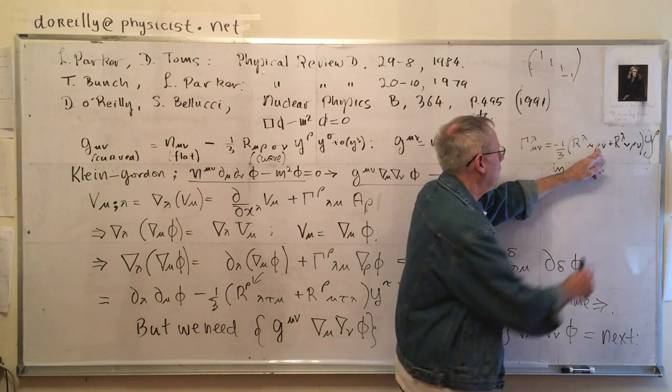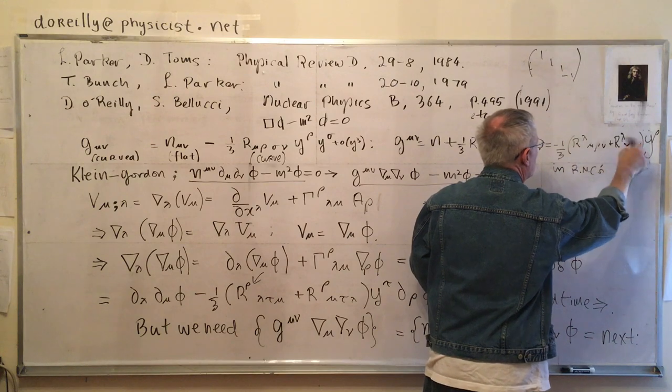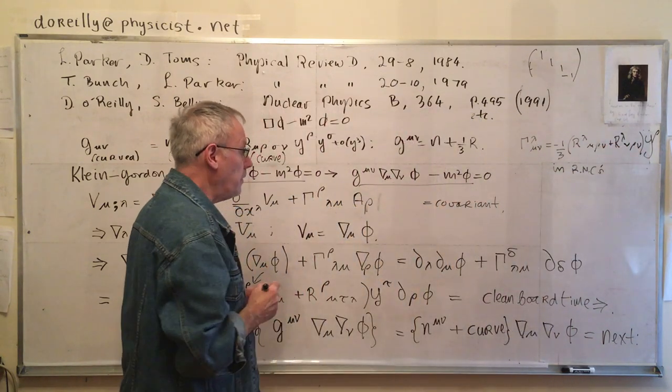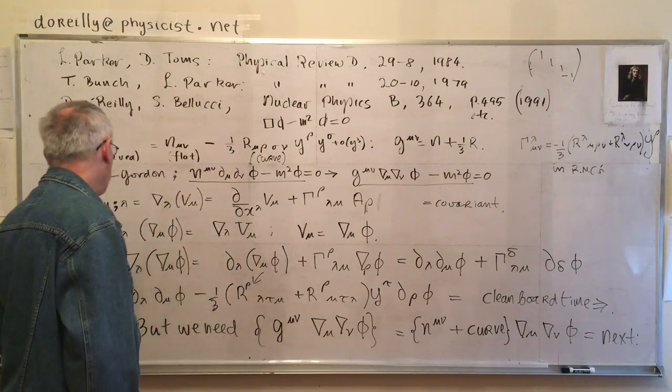Now, the Christoffel symbol, gamma lambda mu nu, is just negative one-third, R sigma lambda mu rho. Now, the rho is in here, and the y rho is there. So the mu nu's and the nu mu's are just swapped. So that's the Christoffel symbol. I also could do a derivative of that, but I didn't need it because I stopped it for a start.